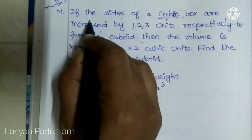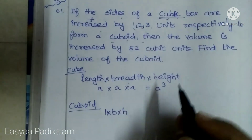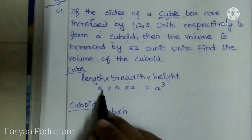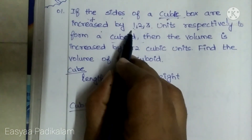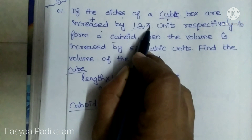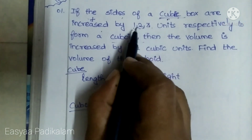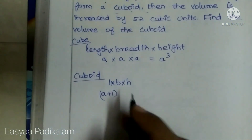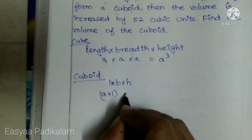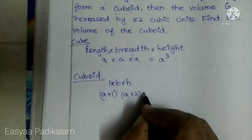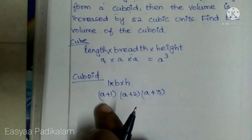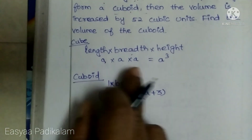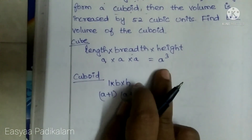Increased — if we add plus 1, 2, 3 — we get (a+1), (a+2), (a+3) as the dimensions of the cuboid.